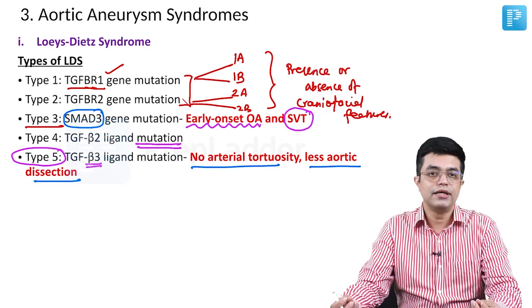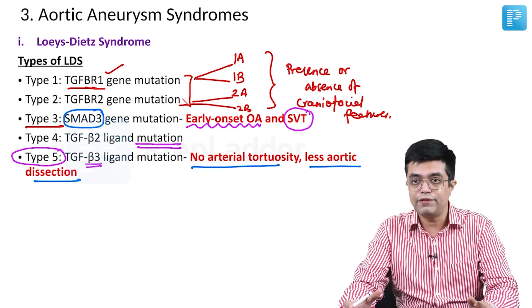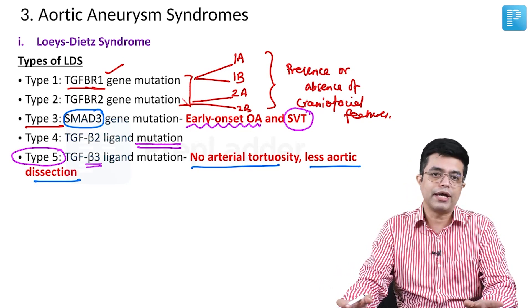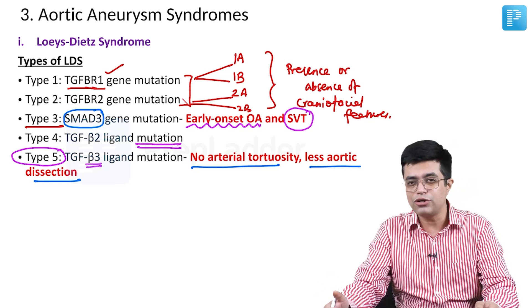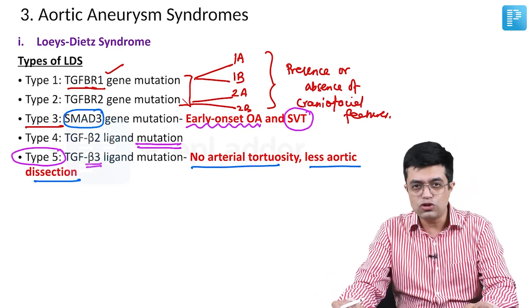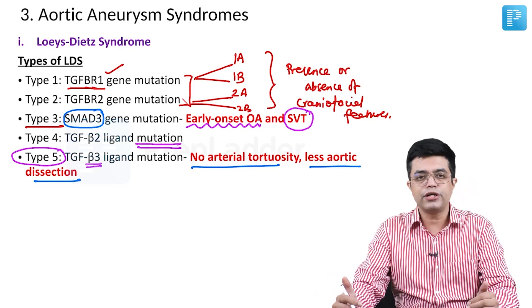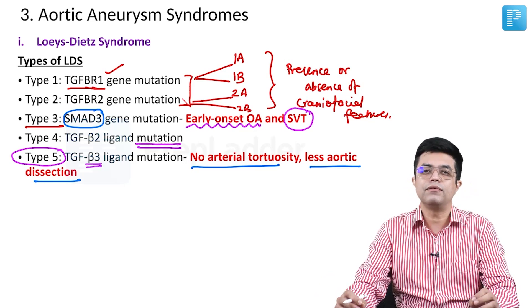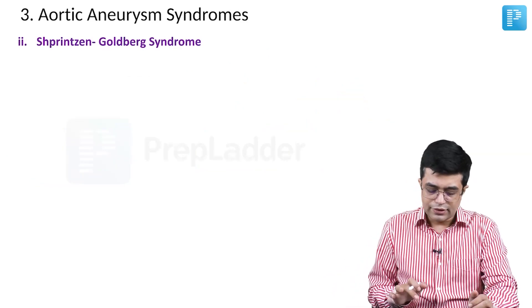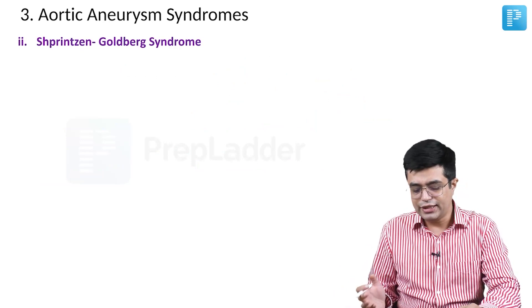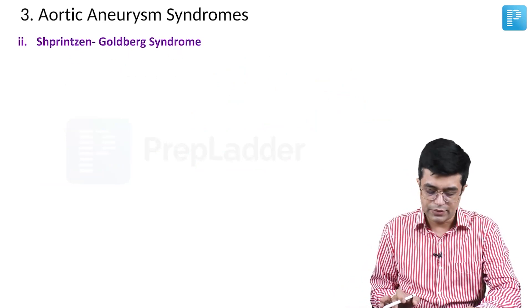Management of Loeys-Dietz syndrome is similar to Marfan syndrome, but for aortic root valve disease you need to be more aggressive. As soon as the diagnosis is made, intensive 3-to-6 monthly echocardiography is needed and elective aortic root repair is needed in virtually all of these patients. The second aortic aneurysm syndrome is Shprintzen-Goldberg syndrome.